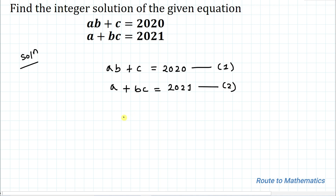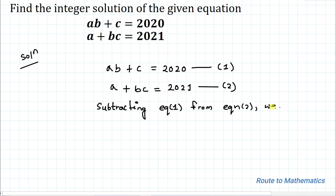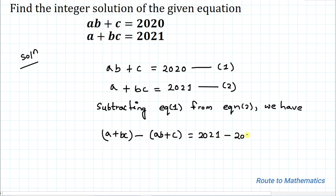In the next step, I am going to subtract equation 1 from equation 2. So by subtracting equation 1 from equation 2 — that is, equation 2 minus equation 1 — we have: A plus BC minus (AB plus C) equals 2021 minus 2020.